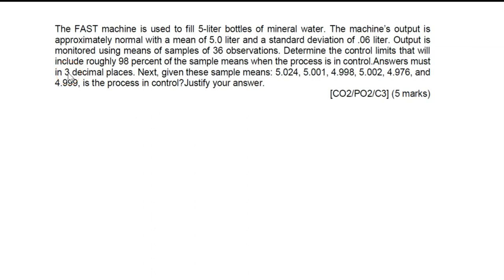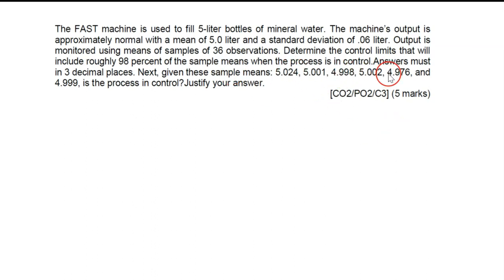Sometimes they ask for 2 decimal places, sometimes 3 — this one is 3 decimal places. After you get the control limit, check whether the data is inside or outside the control limit, and then justify whether the process is in control or not.